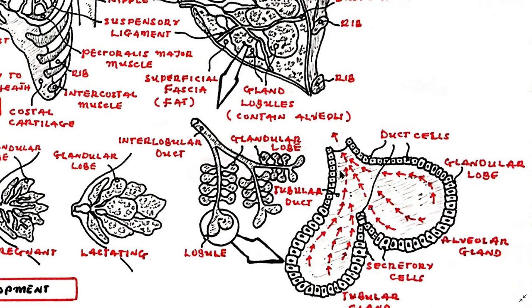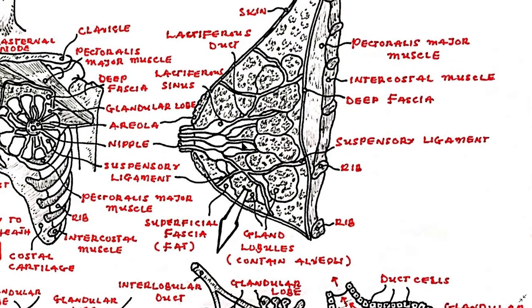There are approximately 15 to 20 lobes, which consist of a number of lobules and interconnecting interlobular ducts. The interlobular ducts converge to form as many as 20 lactiferous ducts. These ducts dilate to form lactiferous sinuses and then narrow again within the nipple. These sinuses function as milk reservoirs during lactation.